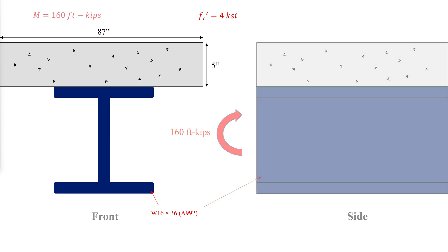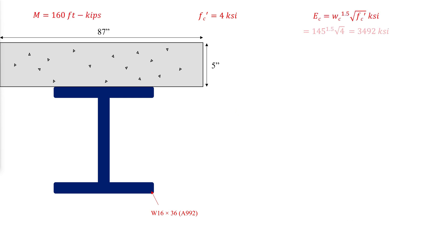Let's start by calculating the elastic modulus of concrete where Wc is the unit weight of the concrete. The ratio of the elastic modulus of steel to that of the concrete is required to calculate the equivalent steel width to replace the concrete.